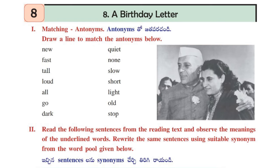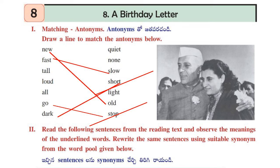Let's see the next worksheet. Here some words are given. We have to do the antonyms — means opposites — match the opposite words. First one: new — old. Next: fast — slow. Next: tall — short. Next: loud — quiet. Next: all — none. Next: go — stop. Next: dark — light.